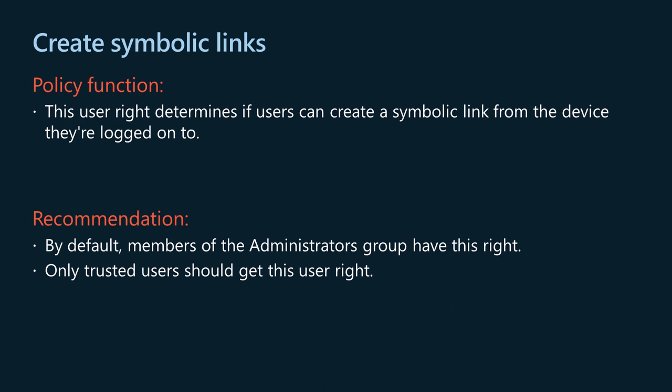The create symbolic links user right determines if users can create a symbolic link from the device they're logged onto. A symbolic link is a file system object that points to another file system object called the target. Symbolic links are transparent to users — they appear as normal files or directories and can be acted upon in exactly the same manner. Symbolic links are designed to aid in migration and application compatibility with Unix operating systems. Only trusted users should get this user right, as symbolic links can expose security vulnerabilities in applications not designed to handle them. By default, members of the administrators group have this right.